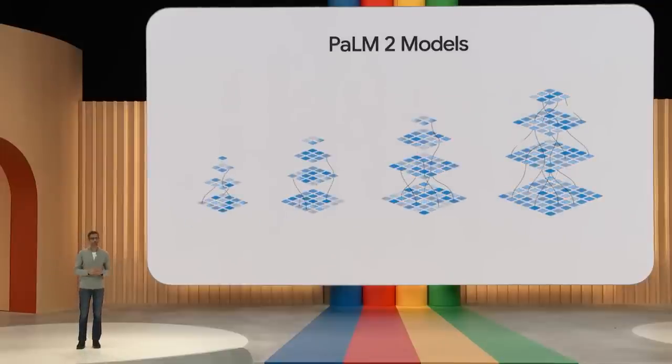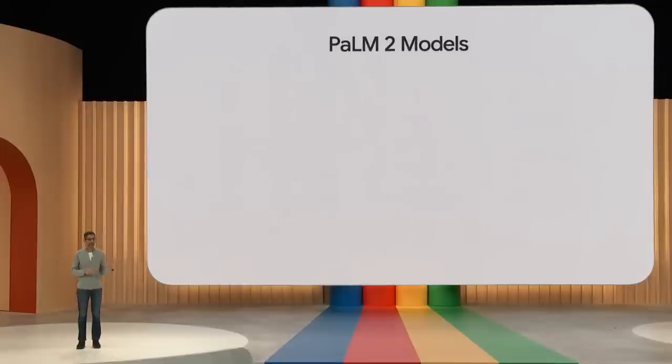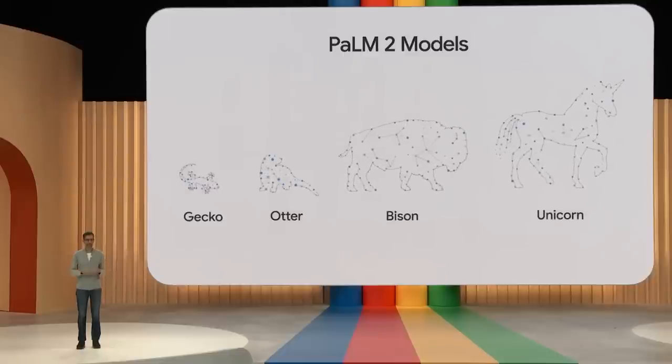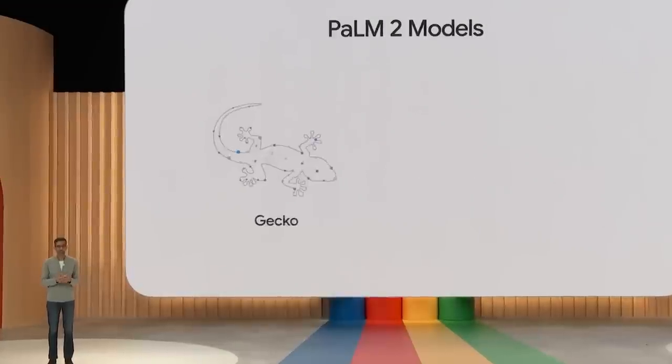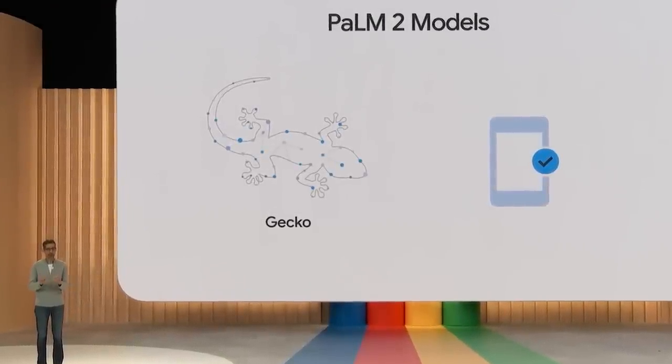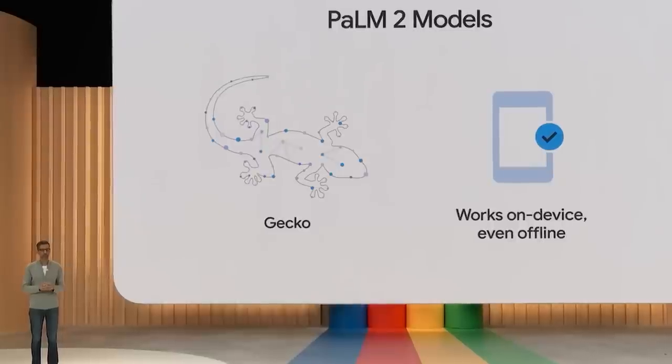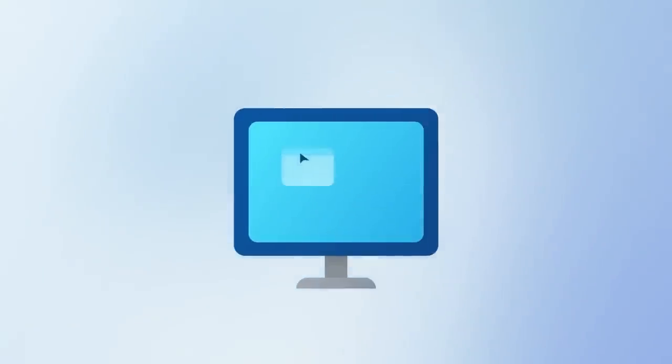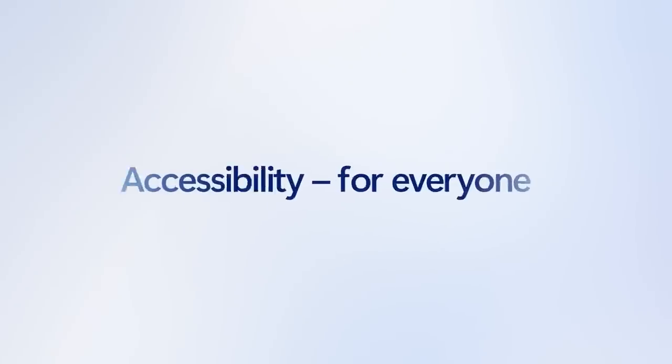In this video, Google announced that PaLM 2 will be coming in four sizes: Gecko, Otter, Bison, and Unicorn, with the last being the largest. The idea is that Gecko, which is in fact the smallest of them all, will be able to run on mobile devices and offline too. It will be really crazy if Microsoft is able to achieve the same thing with Orca.